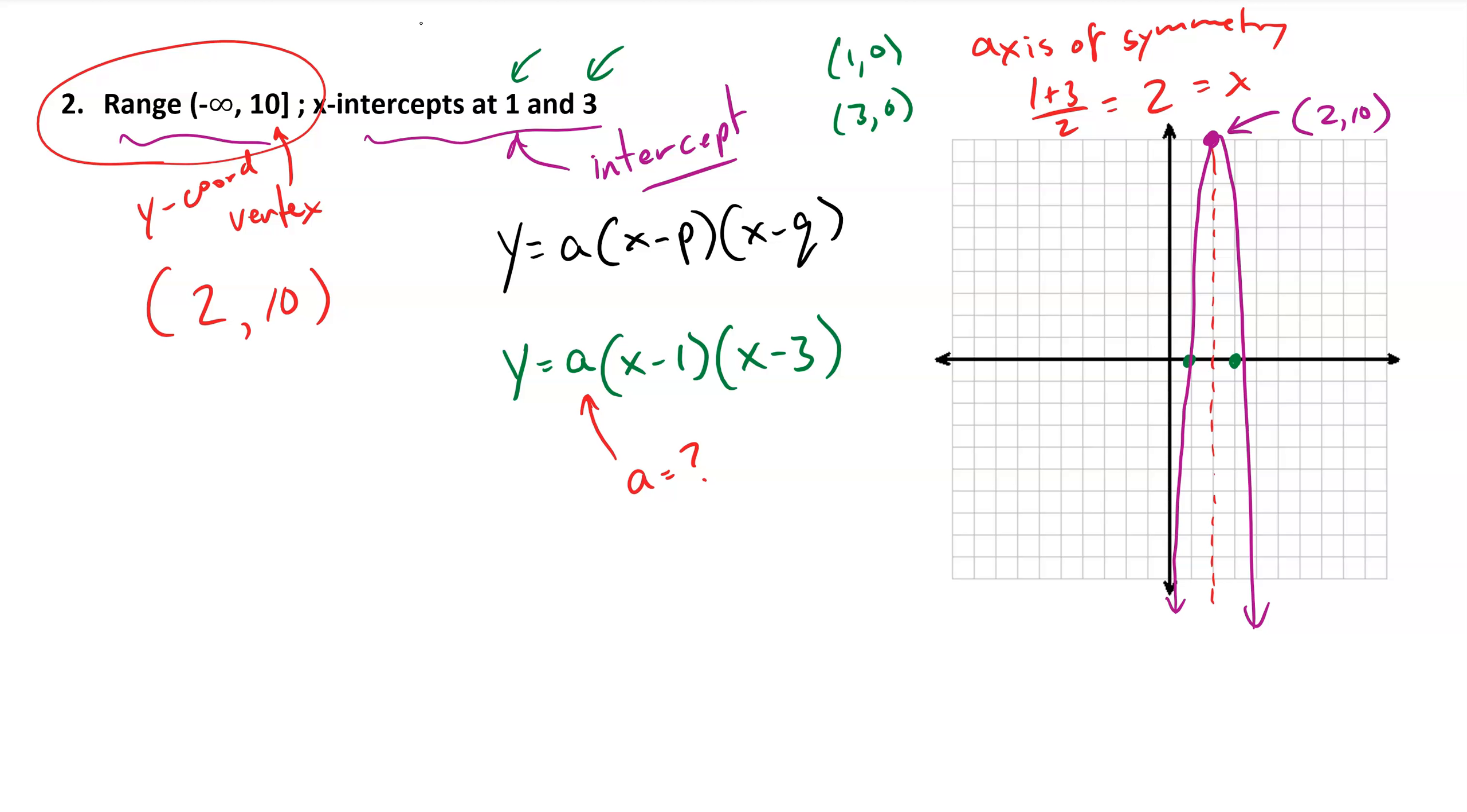Now that I have this second point, now that I know that the vertex is at (2, 10), I can plug that in. If I plug in an x value of 2, so I get 2 minus 1 and 2 minus 3, if I plug that in for x, the y value has to equal positive 10.